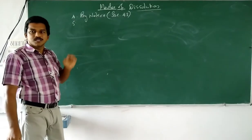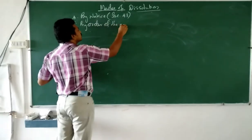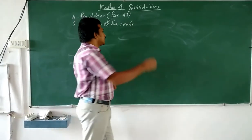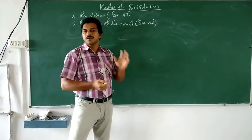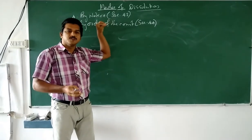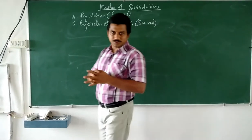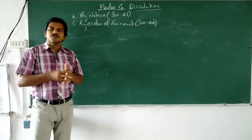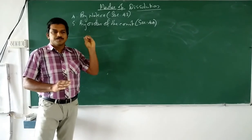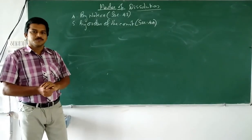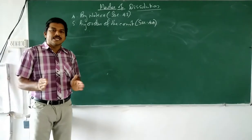The fifth method is dissolution by order of the court, discussed under Section 44 of the Indian Partnership Act. In this type of dissolution, a case comes before the court, and during the proceedings, the court feels it is fit to discontinue the business and gives an order for dissolution.